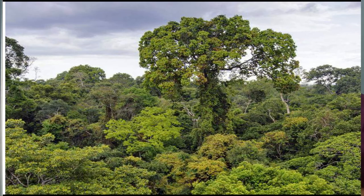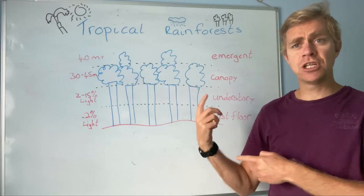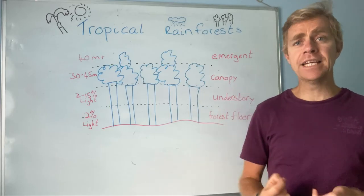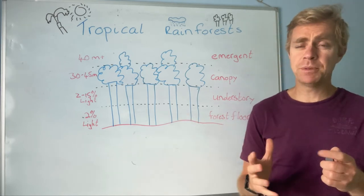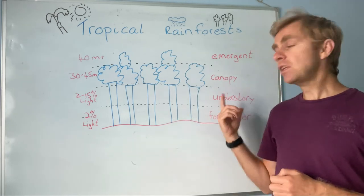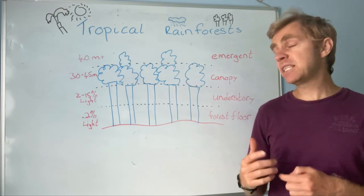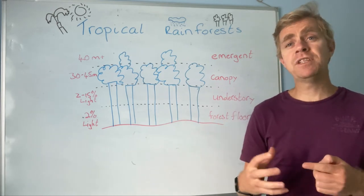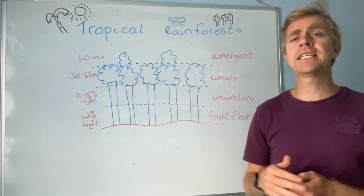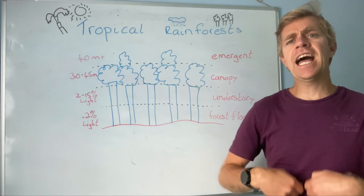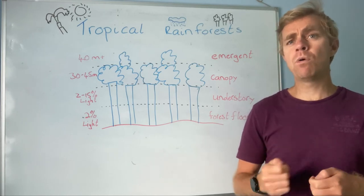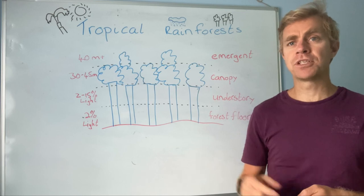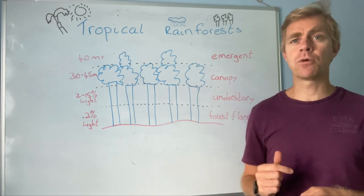That is the emergent layer. So what I'm going to get you to do is create a picture with the four layers: the forest floor that gets about 2% light, the understory that gets between 2% and 15% of the light, above that is the canopy, and the final part is the emergent layer. Those are the four layers that make a tropical rainforest. Give it a go at drawing the picture.